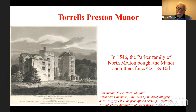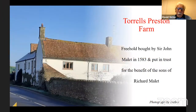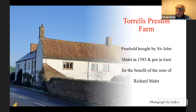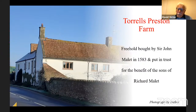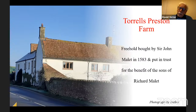One went freehold — a place people will know if they travel through Preston Bowyer. There's a curve in the road, and there's a farm on that corner: Torrells Preston Farm. It was the capital messuage and the main farm of Torrells Preston Manor, and it's still there. It was bought freehold by Sir John Mallet in 1583, and he put it into trust for the benefit of the sons of Richard Mallet, his nephew. He put two trustees in charge: Humphrey Wyndham, the younger son of Sir John Wyndham, whose family had an estate in Wiveliscombe, and John Francis, the Lord of Cumflory Manor.